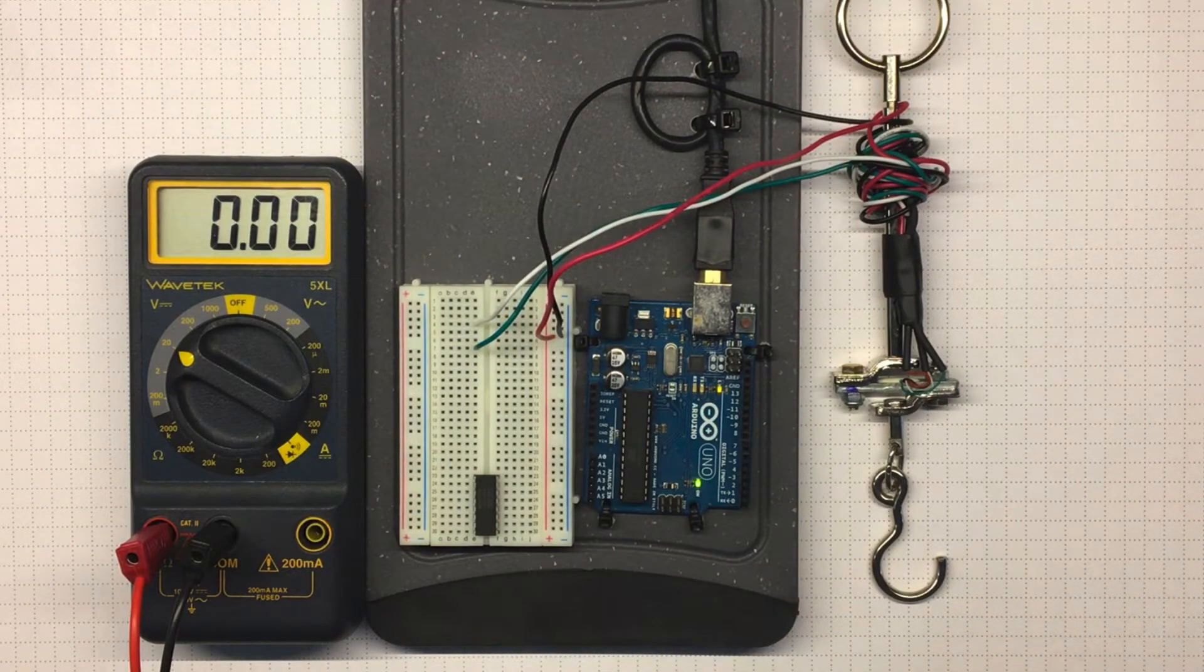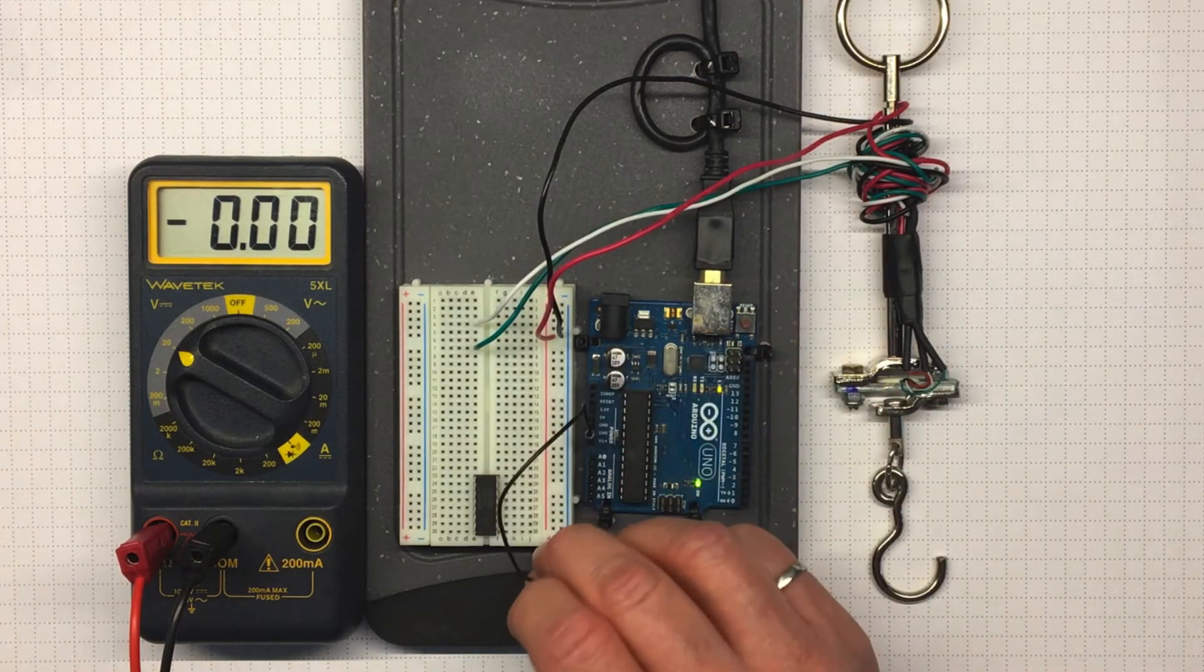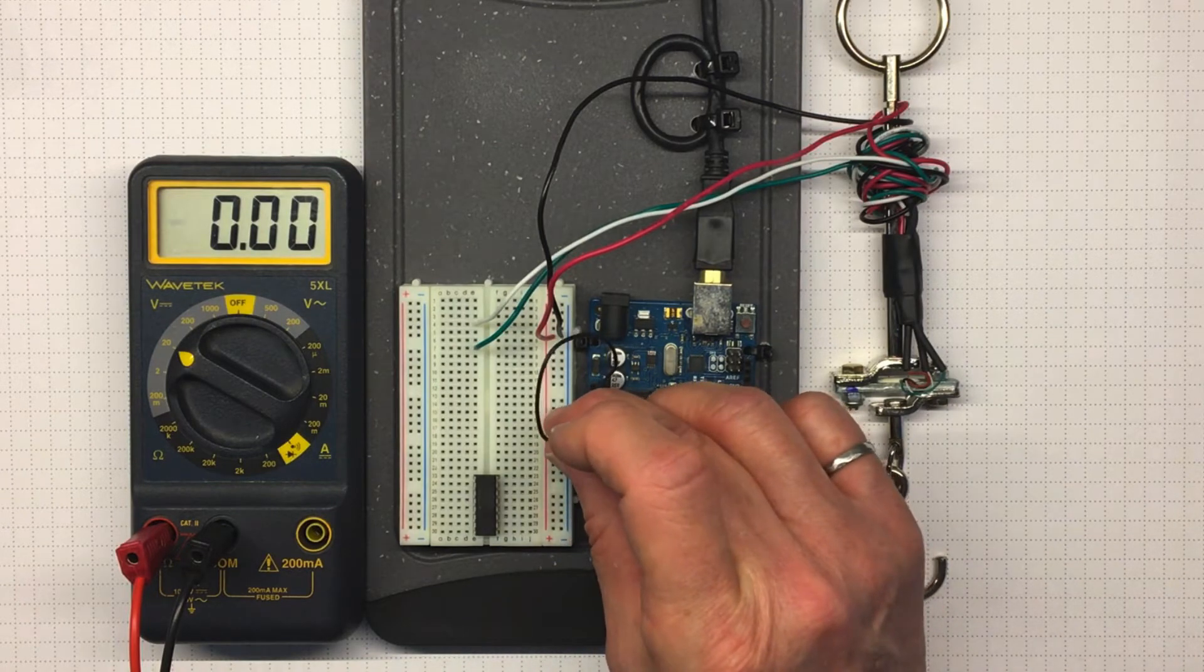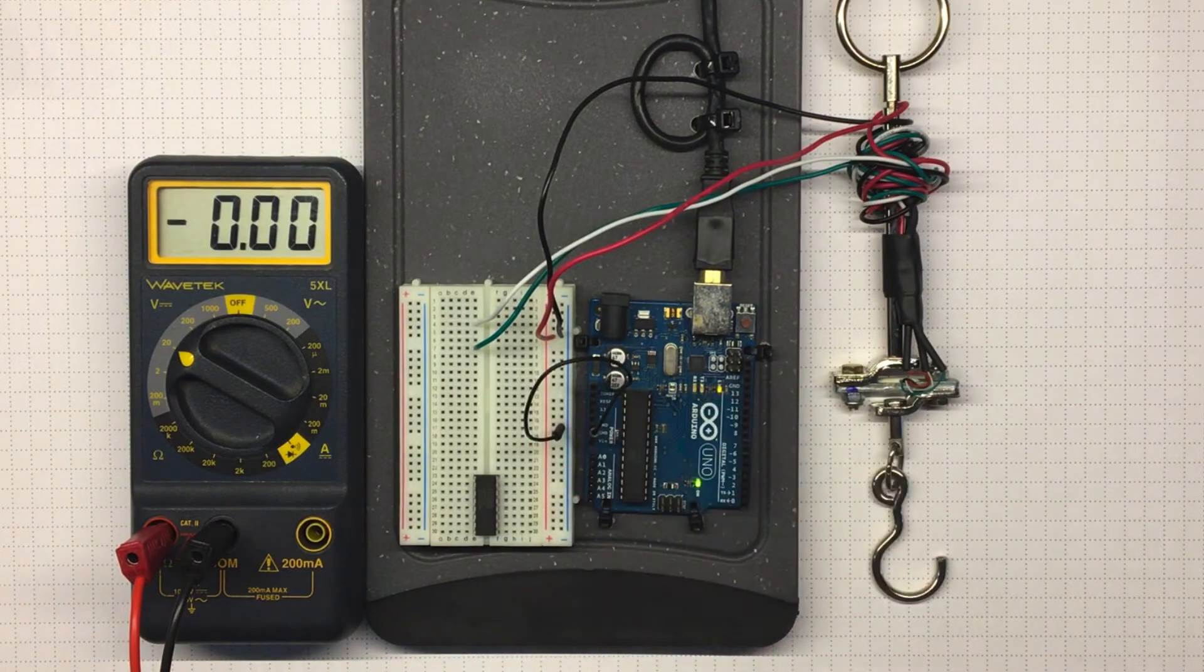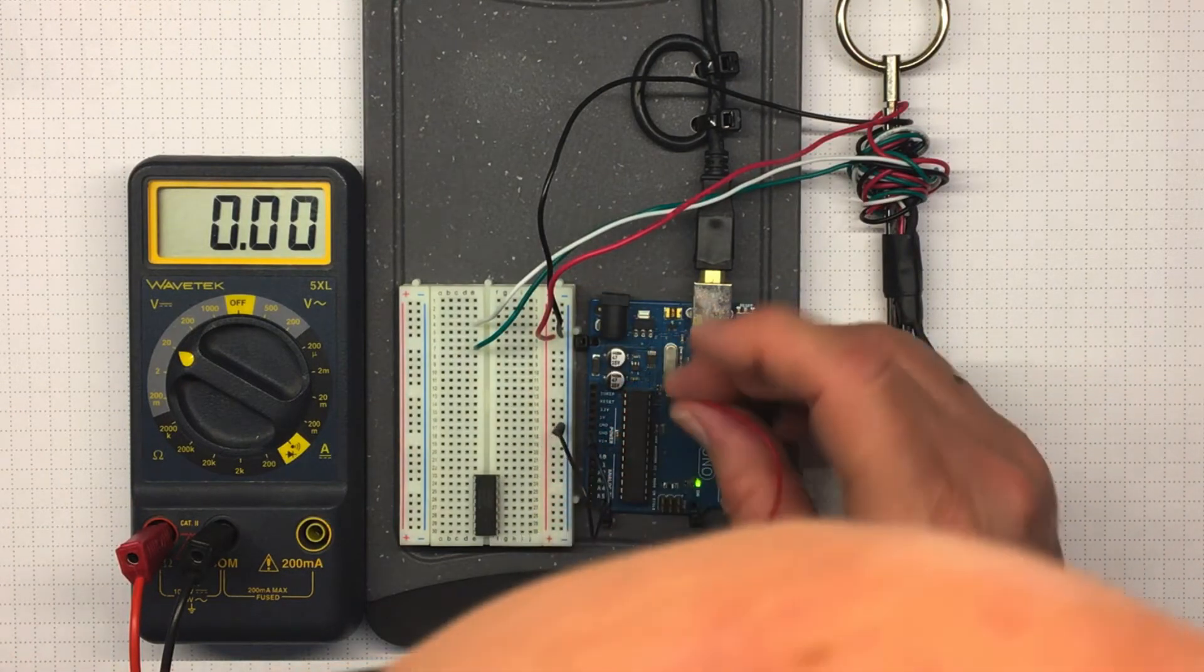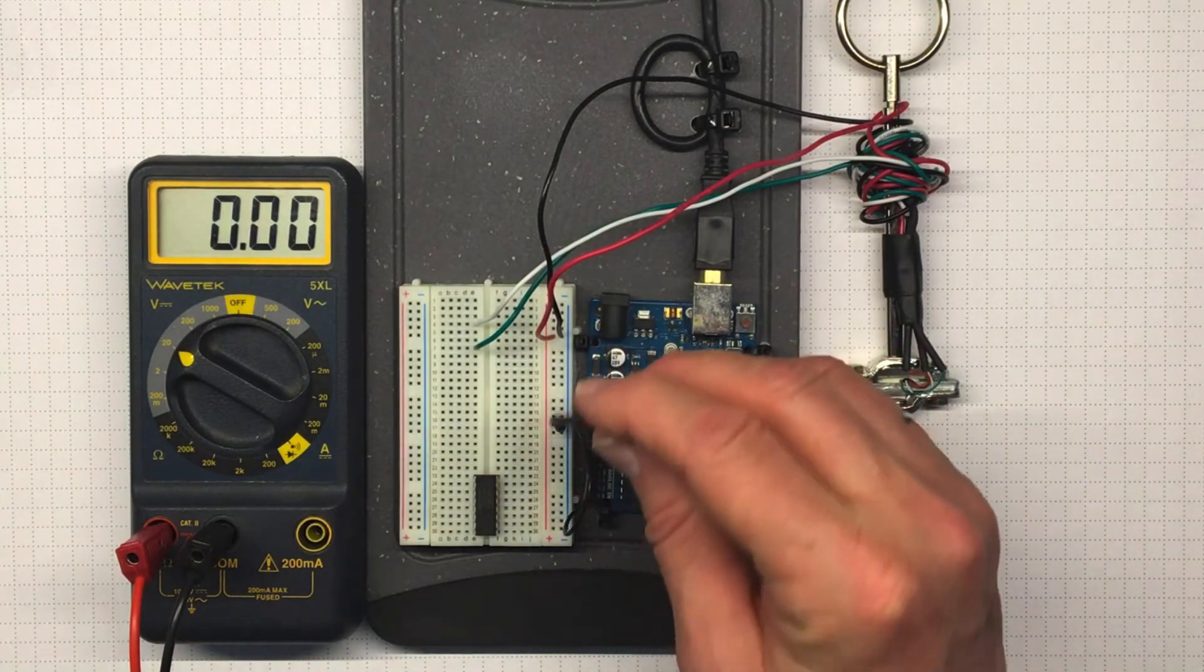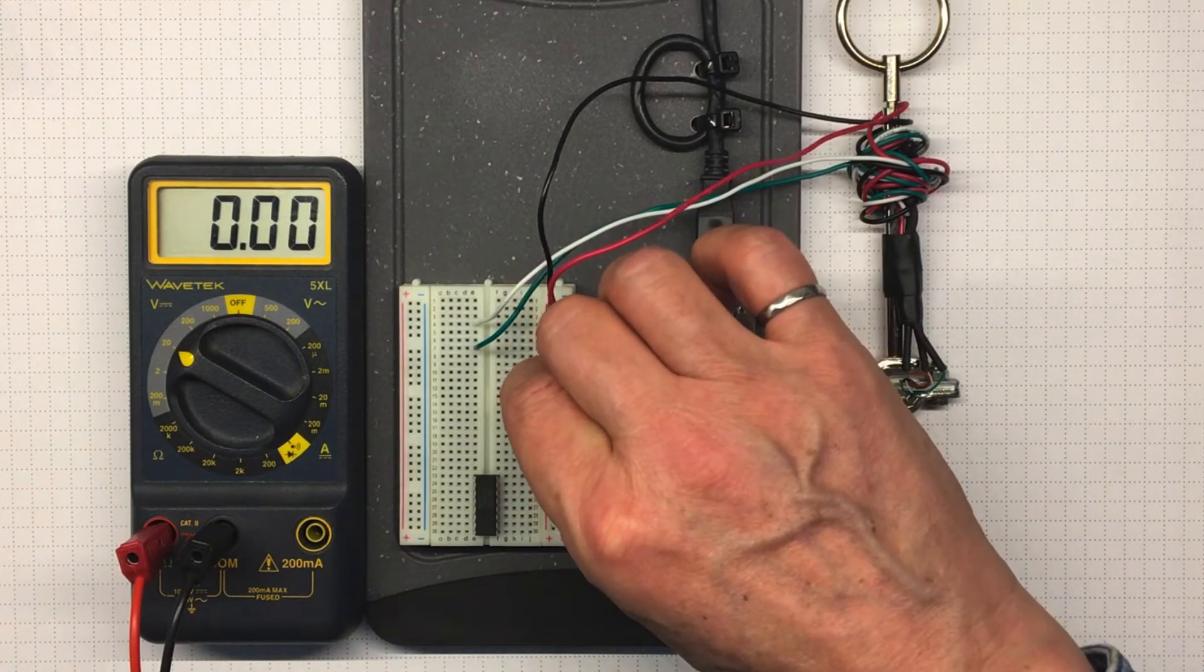So I'm going to connect as always from ground over to the blue wire or the blue trace on my breadboard. And from plus five over to the red trace.